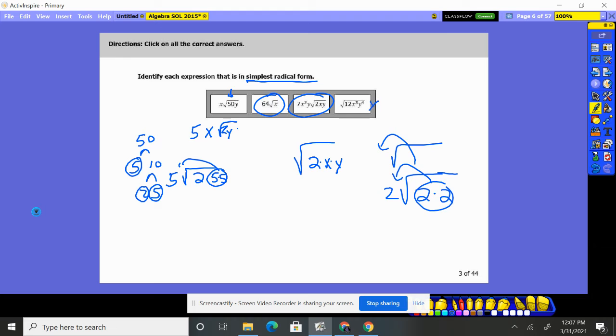This one, nope, it's not in simplest form because you have 12, which is two, two, and three. So a two is going to come out. But you also have X, X, X and Y, Y, Y, Y. So you have a pair of X's coming out and you have two Y's coming out. You got a lot of things coming out. So no chance, that's a no.